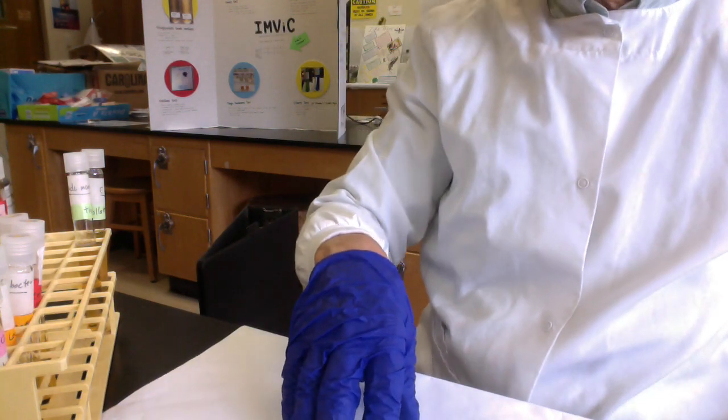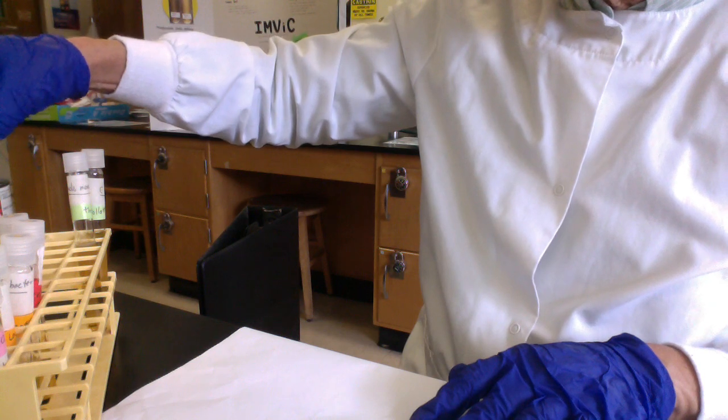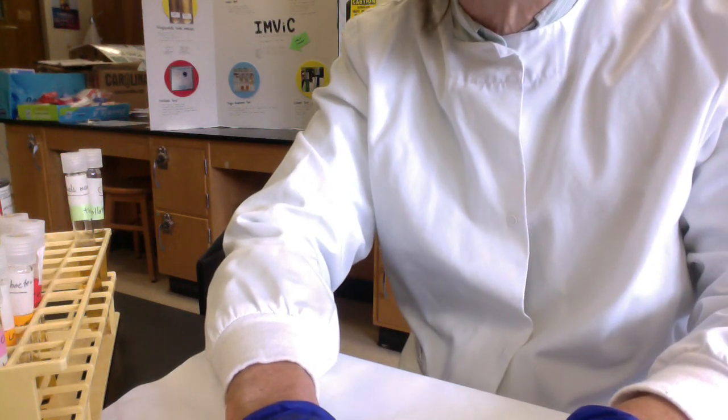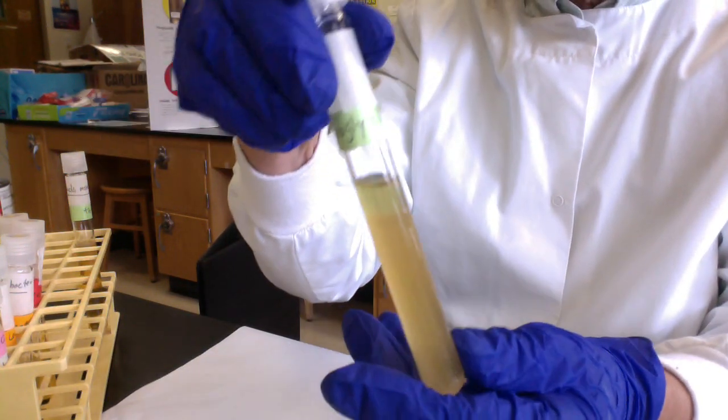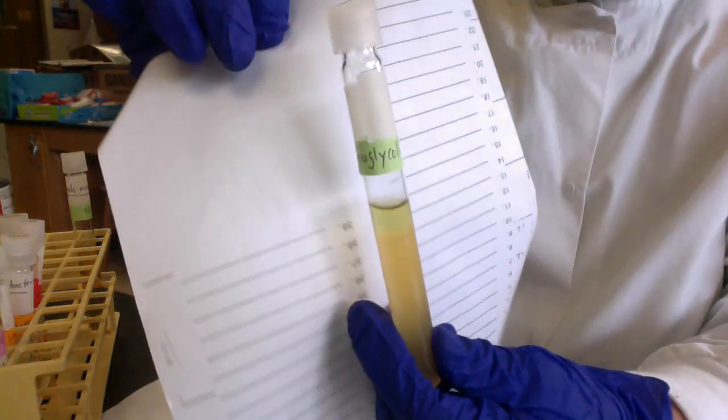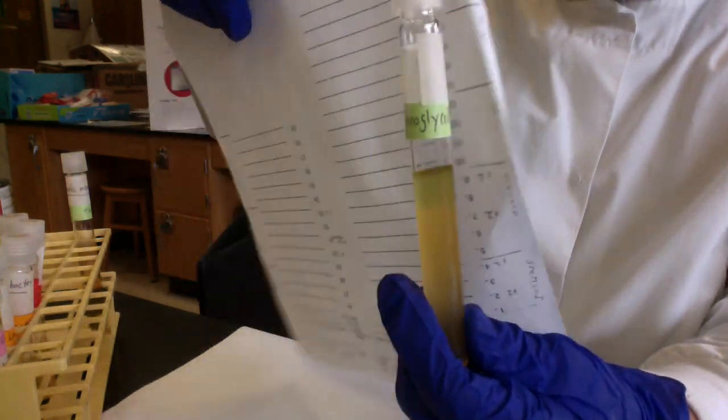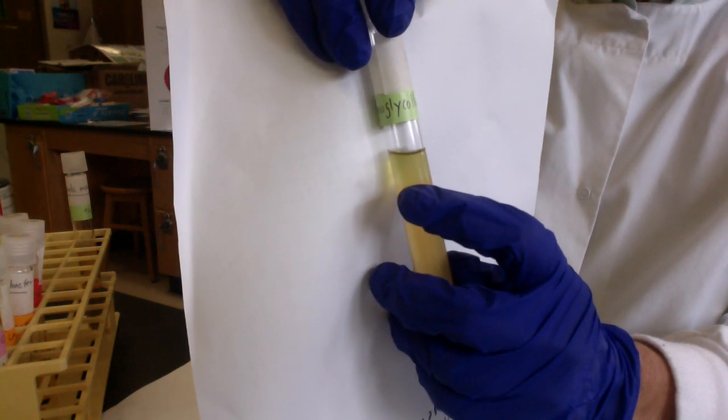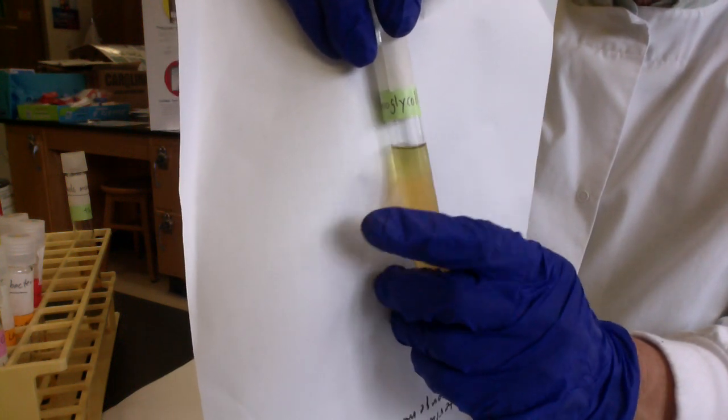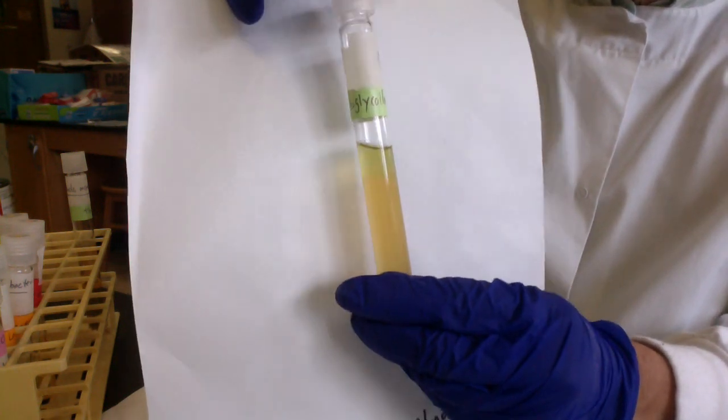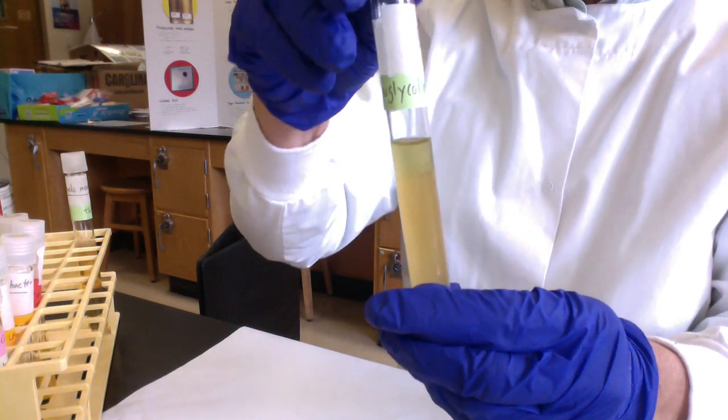In Chapter 16, we also inoculated thioglycolate media. Thioglycolate reduces molecular oxygen. At the top, there's a green zone—an oxidation-reduction indicator. Where it's green, oxygen is present. Down below is totally anaerobic from the thioglycolate reducing molecular oxygen. We look at the pattern of growth without shaking the tubes.